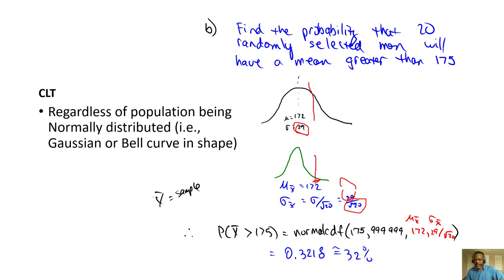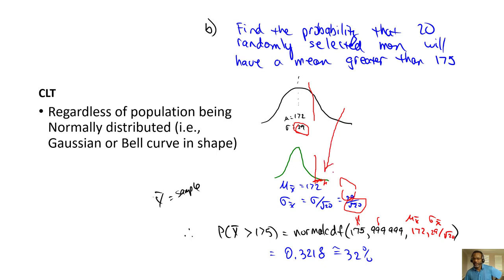When we want to determine the area corresponding to a sample mean greater than 175, we use Normal CDF. The left bound is 175, the right bound is infinity — so 999,999 — and we set the curve for this problem: the mean is the same as the population mean, and the standard deviation is sigma divided by the square root of 20. Visually, we can see there's going to be a much smaller area. On one hand, for one individual we're looking at 46%; for 20 men, punching this into the calculator gives about 32%.